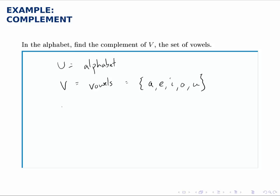So the complement of the vowels is all the letters that aren't vowels, and of course those would be the consonants. We can list them: B, C, D, F — I won't bother listing all of them, but it's the other 21 letters in the alphabet.